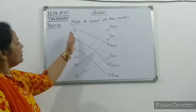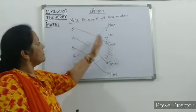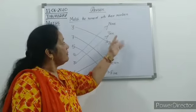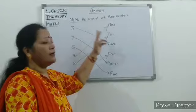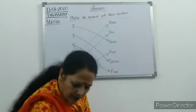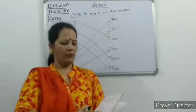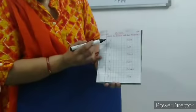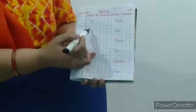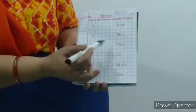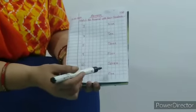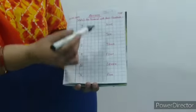Aapne numerals ko unke number names se match kiya hai. Show your homework. Aapka homework bhi main show karni ho. Look at this: 3 ko THREE se match karenge, 7, 5, 9, 10 and 4 — yeh aapko sabko match karni hai, like this. Okay.